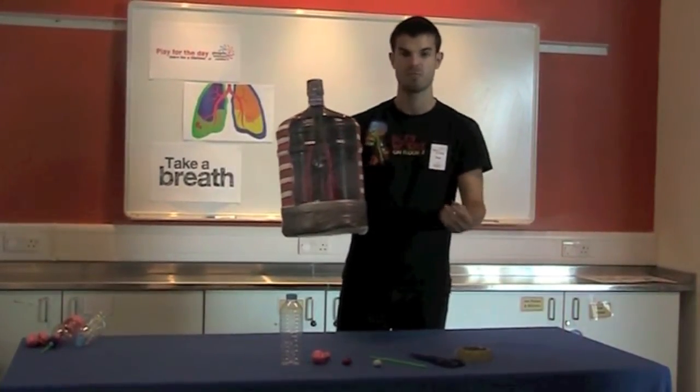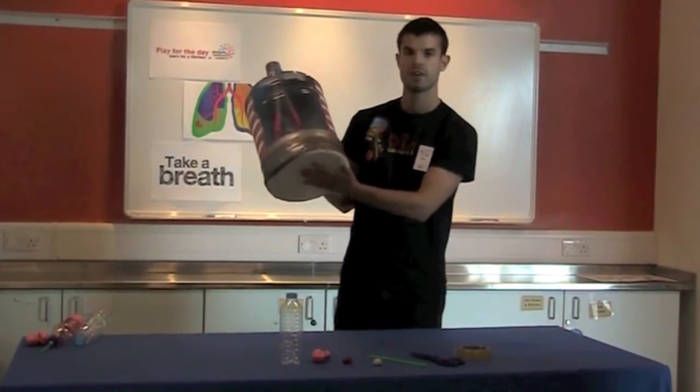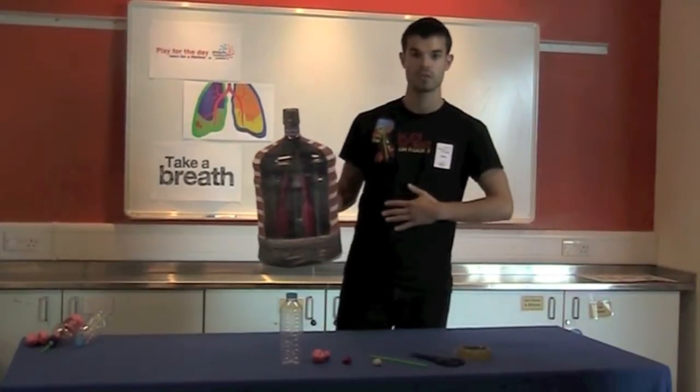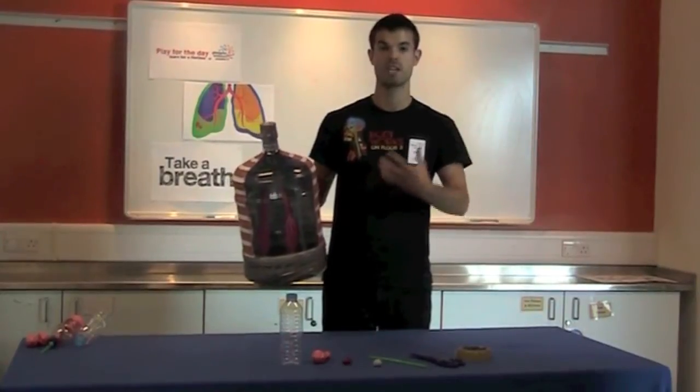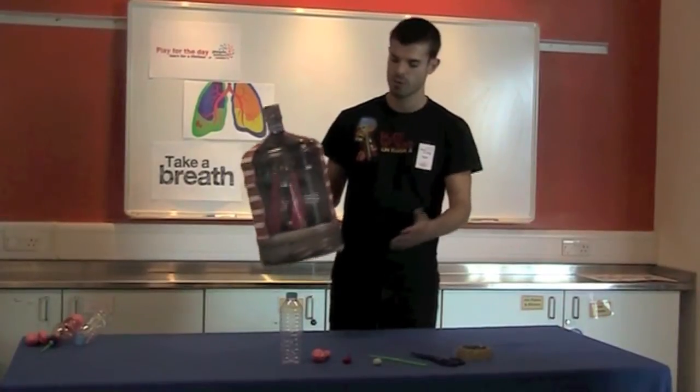Now, our lungs aren't made of muscle. They are just tissue. And it's this bit underneath here called the diaphragm, which is the most important bit. When you take your deep breath, you feel that moving downwards to change the shape of your chest and draw that air in. Then when you relax, it goes back up and pushes the air back out. And that's how we breathe.